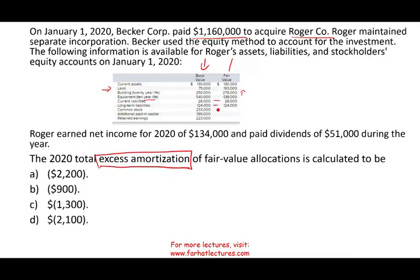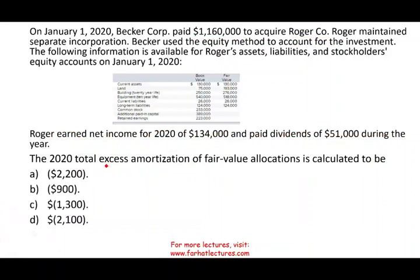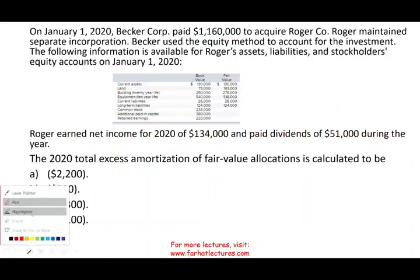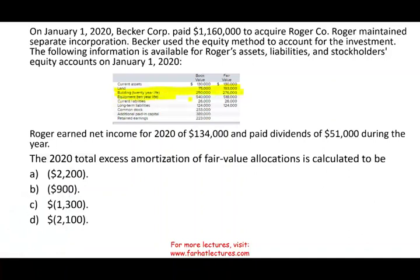We are also given that net income is $134,000 and dividends are $51,000. For excess amortization I only need to look at the accounts that differ between book value and fair value — that's where the excess arises. Three accounts differ: land, building, and equipment. Those are the accounts that will result in excess amortization.